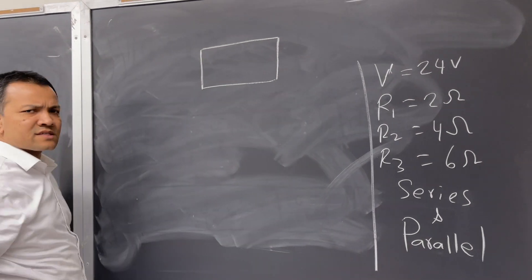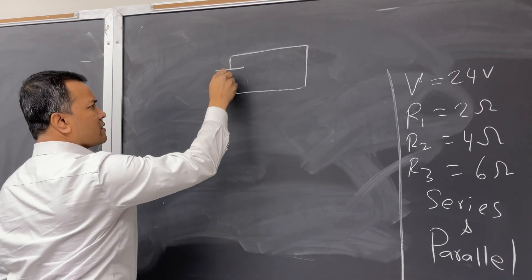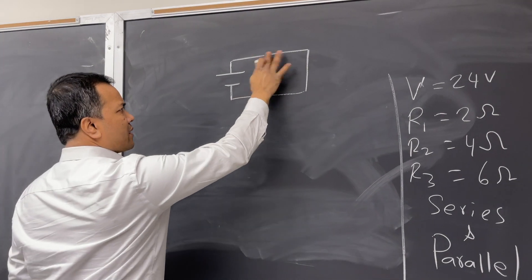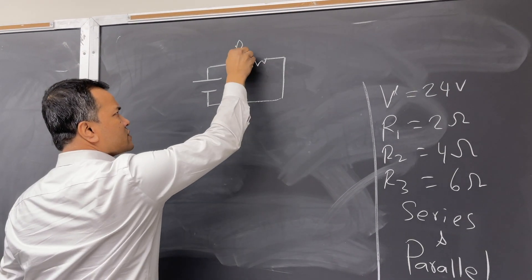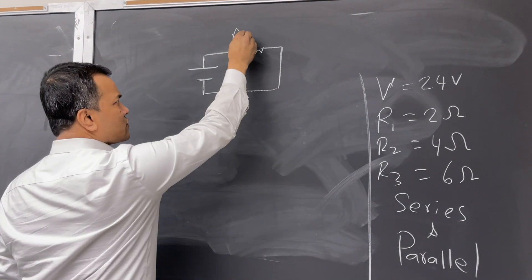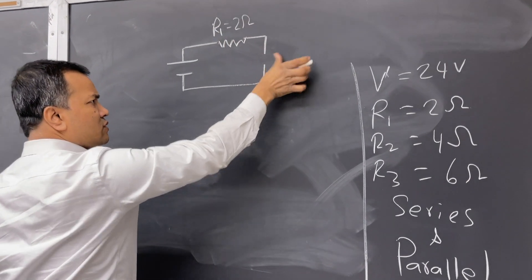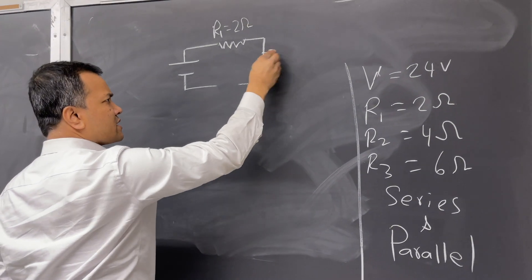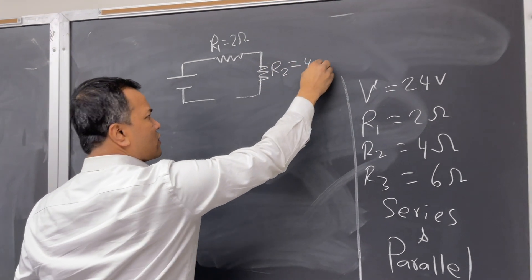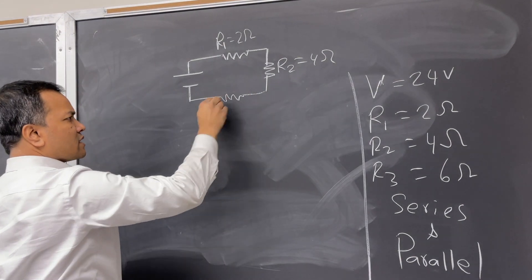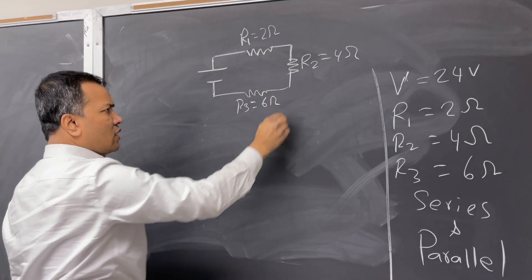We always start the series circuit with a rectangle, then put the battery symbol, and then you have resistor 1 which is 2 ohms, resistor 2 which is 4 ohms, and resistor 3 which is 6 ohms.